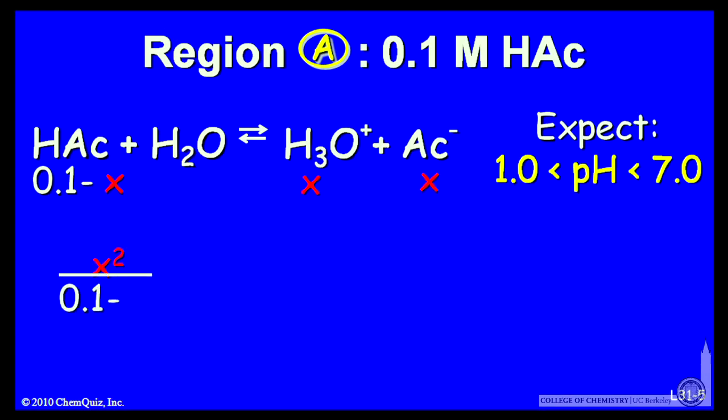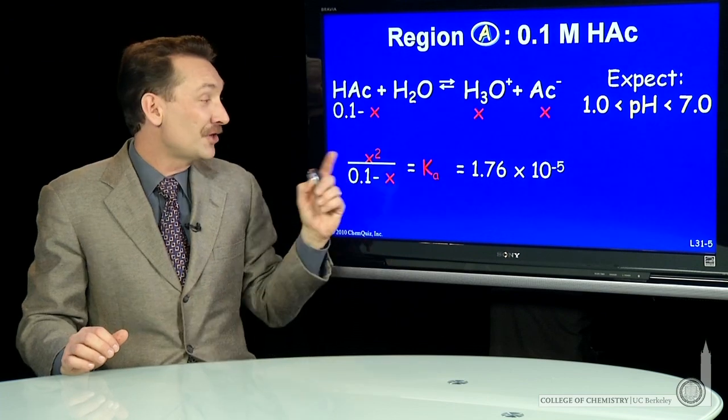Now, I can put those into the expression for the equilibrium, the products over the reactants. And I can look up, let's say I'm using acetic acid, the equilibrium constant for acetic acid, and solve for x.